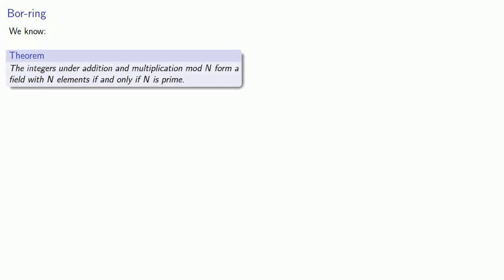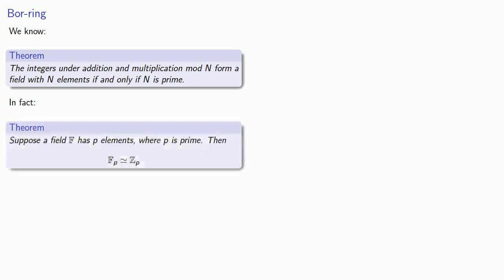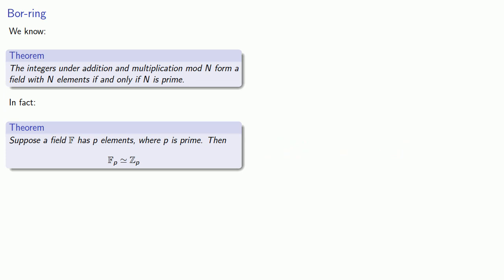The integers under addition and multiplication mod n form a field with n elements if and only if n is prime. So the real question is: are there other fields with a prime number of elements? In fact, no. If a field has p elements where p is prime, then the field is isomorphic to Zp. So the fields with a prime number of elements aren't very interesting — we know all of them. The important question is: what if you don't have a prime number of elements?